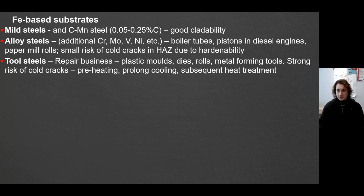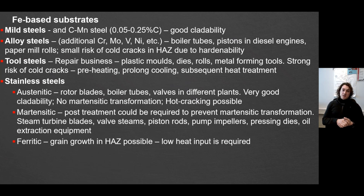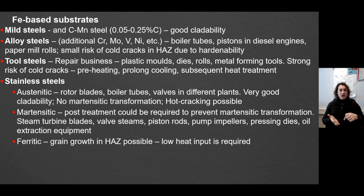In that case you can achieve a good quality coating. Another group of materials is related to stainless steels, which might be austenitic, martensitic, and ferritic. Austenitic steels are quite commonly used in boiler tubes, rotor blades, and walls of different plants. They are very good to clad as you don't get any martensitic transformation. The only risk you have is hot cracking, so you really have to think about how to avoid overheating in the melt pool and how to avoid a so-called heat buffer.